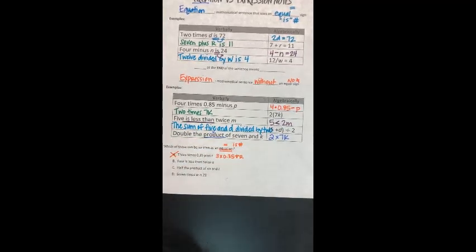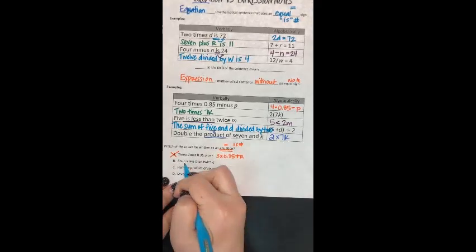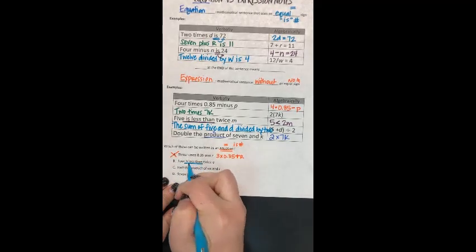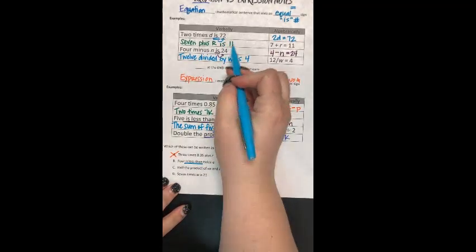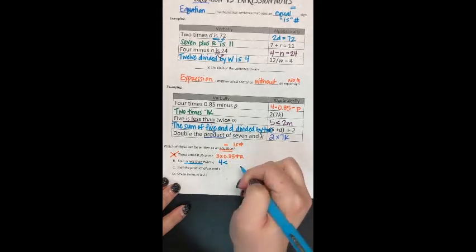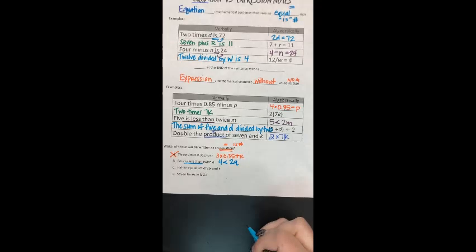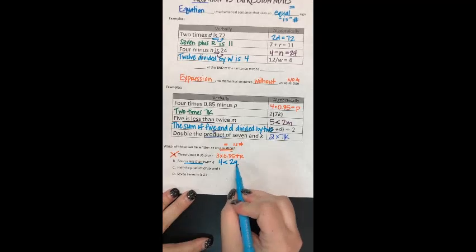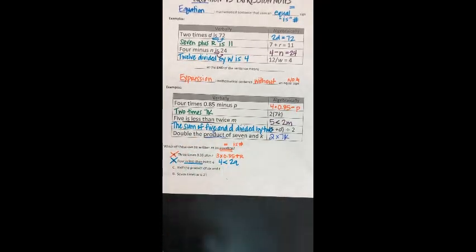So let's try letter B. Letter B says 4 is less than. So we do have that is, but it's followed by the words less than, which is not our number we want. So 4 is less than twice q. Again, not an equation because it doesn't have an equal sign. It has a less than sign.